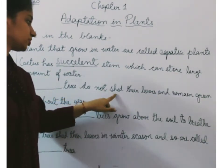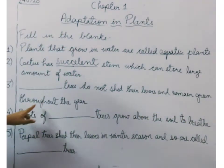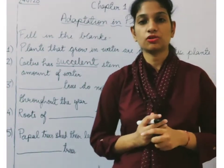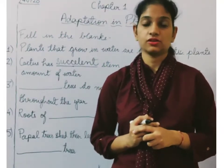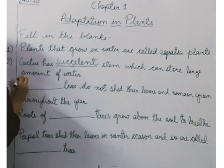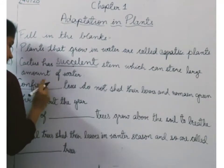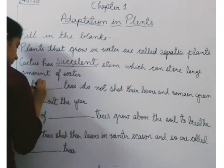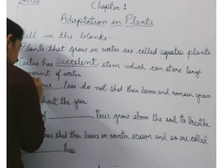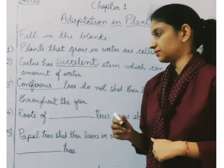Next: dash trees do not shed their leaves and remain green throughout the year. Which trees do not shed their leaves and remain green throughout the year? Coniferous trees — or they are also known as evergreen trees. So you can write down coniferous trees or evergreen trees.